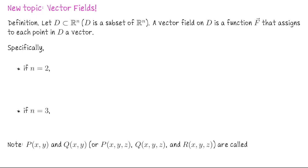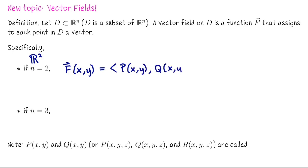So how we denote this, if we're working in R2, is we write the vector-valued function f(x,y) equal to an output with component functions p(x,y) and q(x,y). These are vector-valued functions like we've seen before with curves, but the difference is that the function is of multiple variables — to a point in R2 it associates a vector with two coordinates.